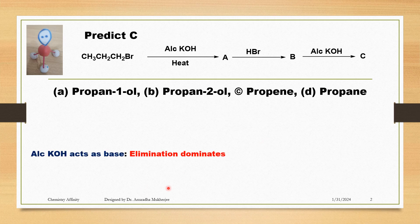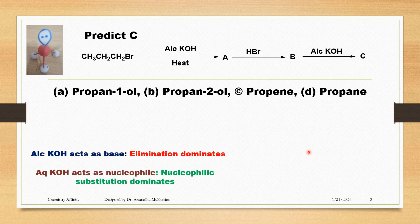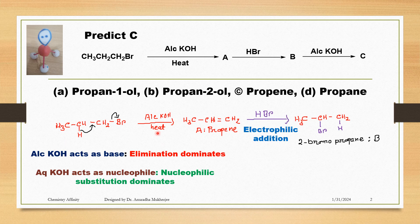We know alcoholic KOH acts as a base. Here elimination reaction dominates over nucleophilic substitution. On the other hand, aqueous KOH acts as a nucleophile. That means here nucleophilic substitution reaction dominates over elimination reaction.